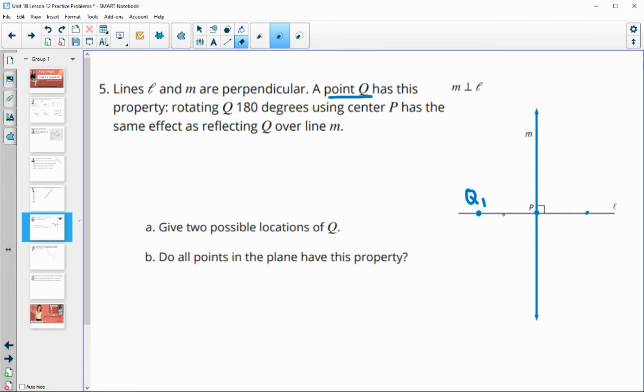Well, and really, I mean, that's fine. I could also put it on the other side. So it doesn't have to be on this left side. I could put Q, the second possibility for Q to be over here. And then do all points in the plane have this property? And that would be no, because I showed you a couple examples. Okay, so only points that are on line L.